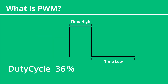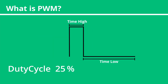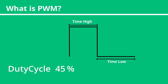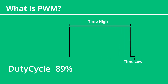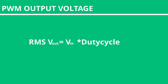By changing the amount of time that the voltage is high relative to the amount of time the voltage is low, we can change the average voltage over that time period. When you do the maths to calculate the average voltage, you'll see that the duty cycle times the input voltage gives you the average voltage at the output.